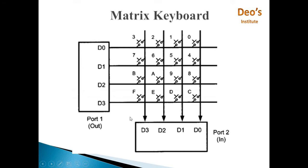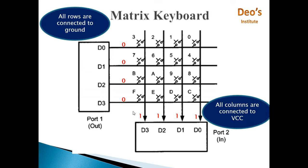We check through port 2 whether any key is pressed, and if it is pressed, then which key is pressed. To identify this, first all rows are connected to ground.